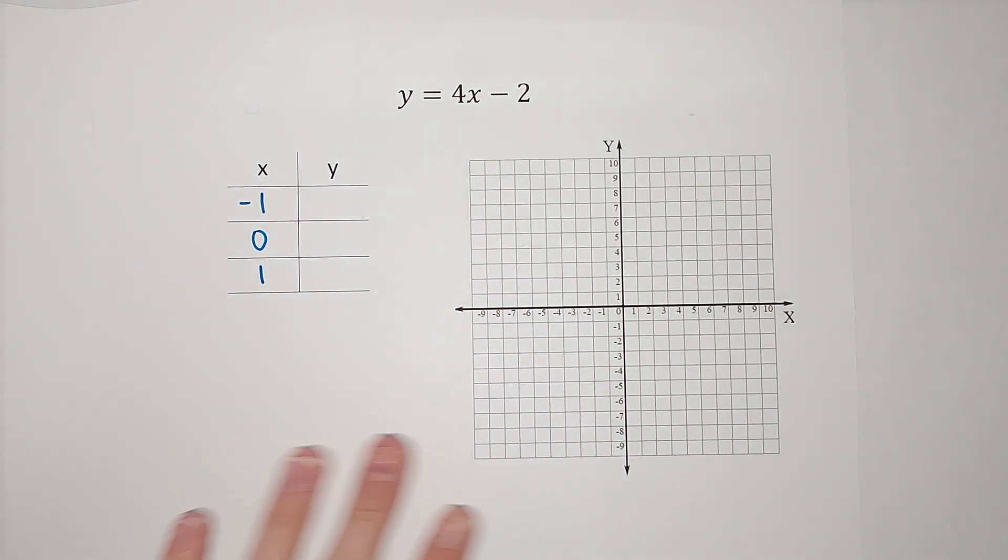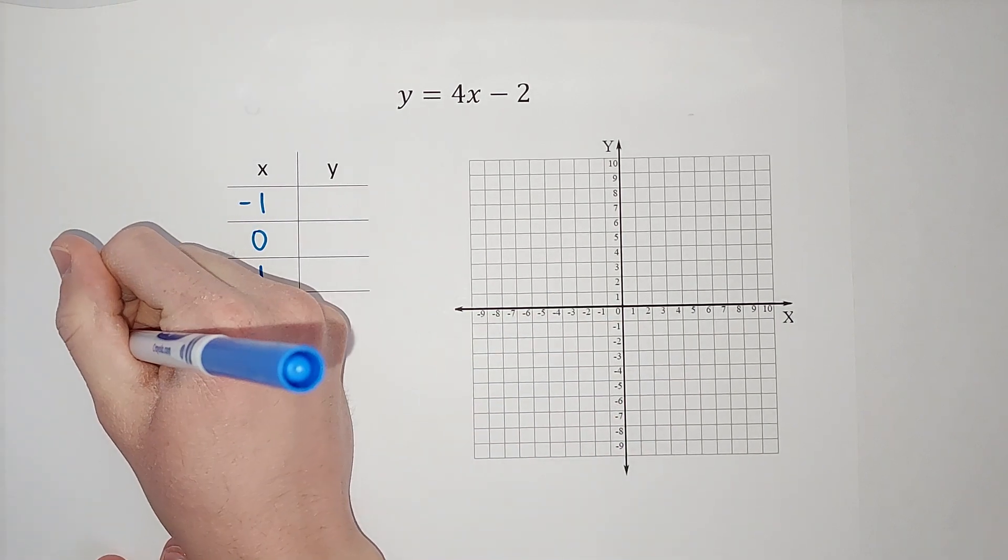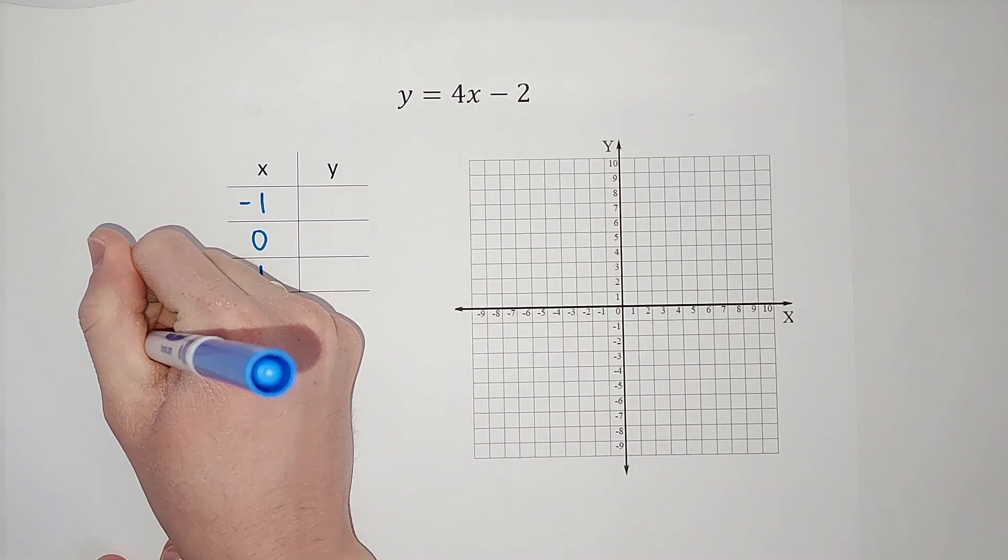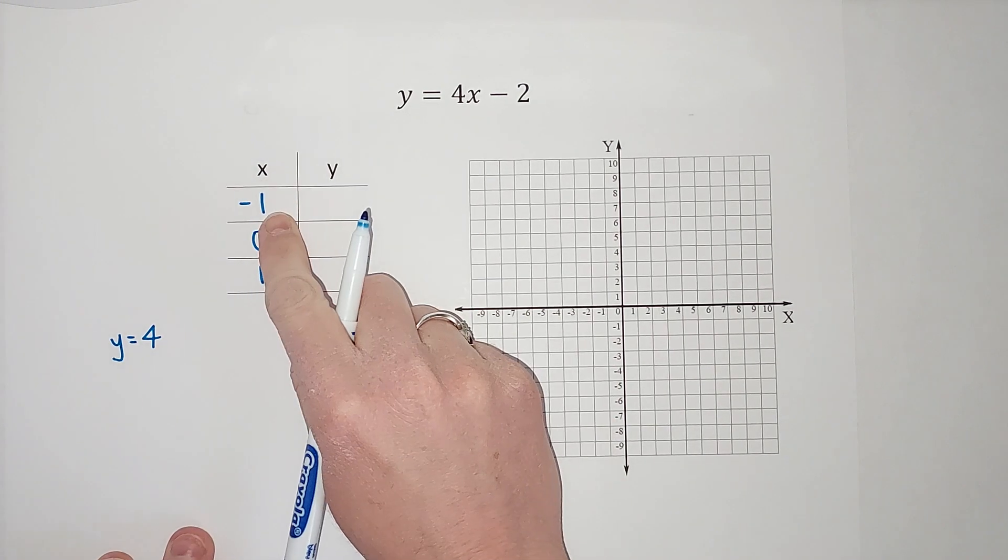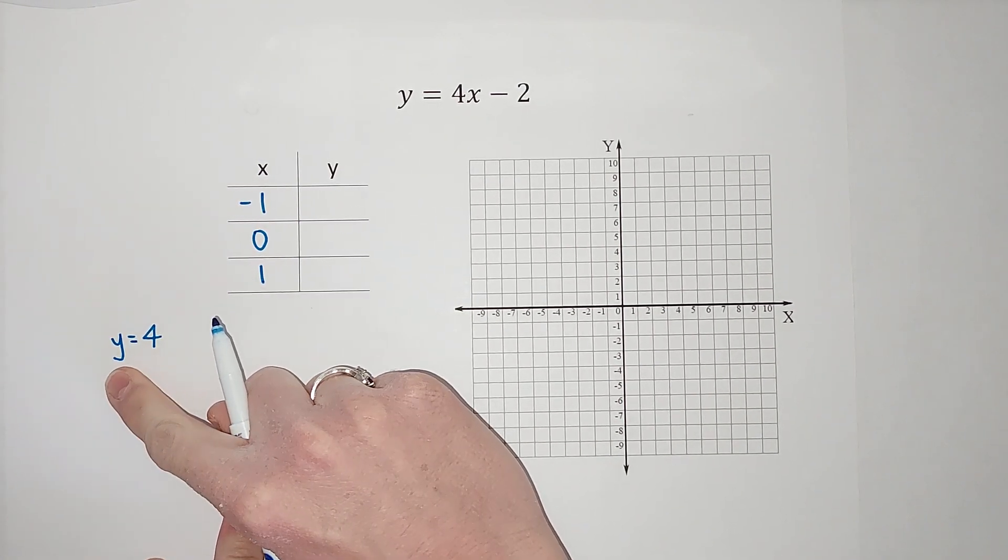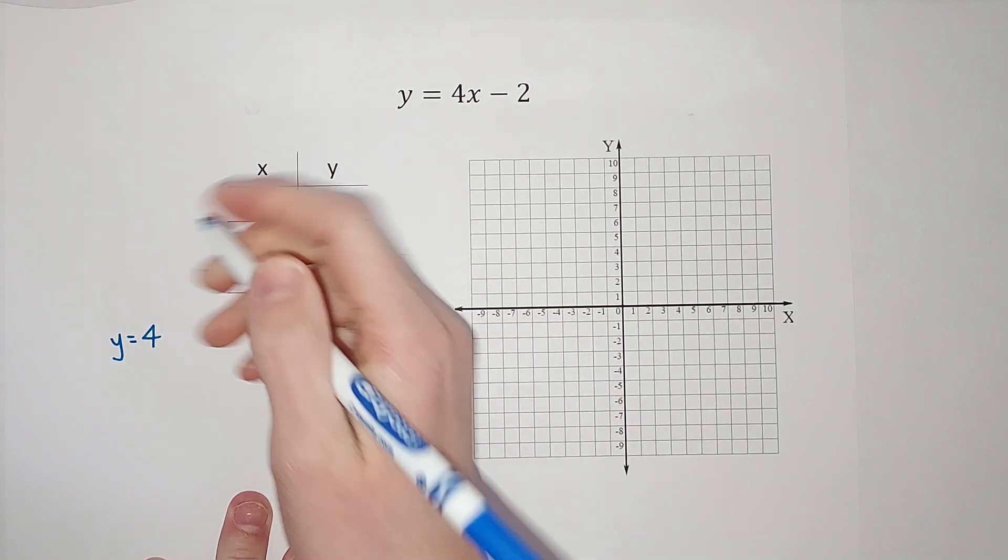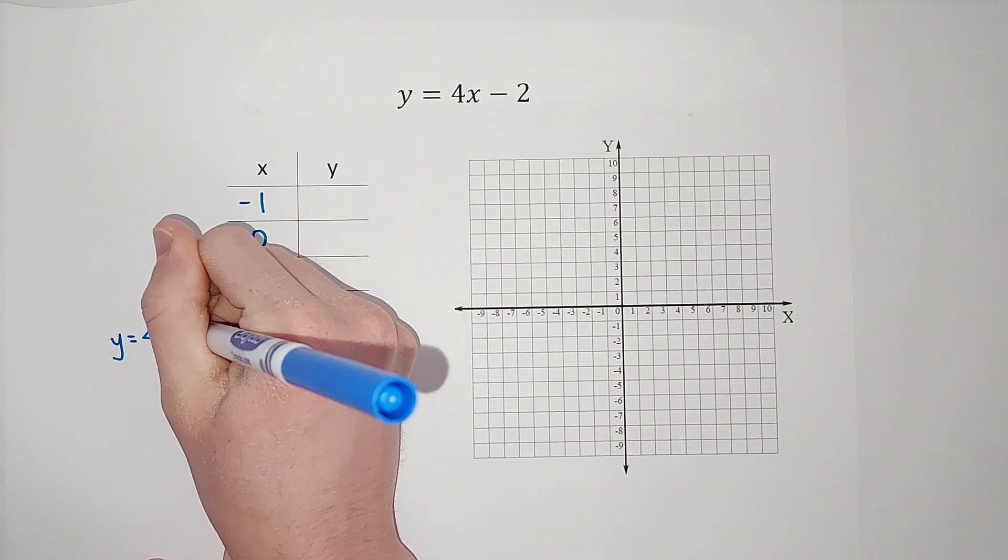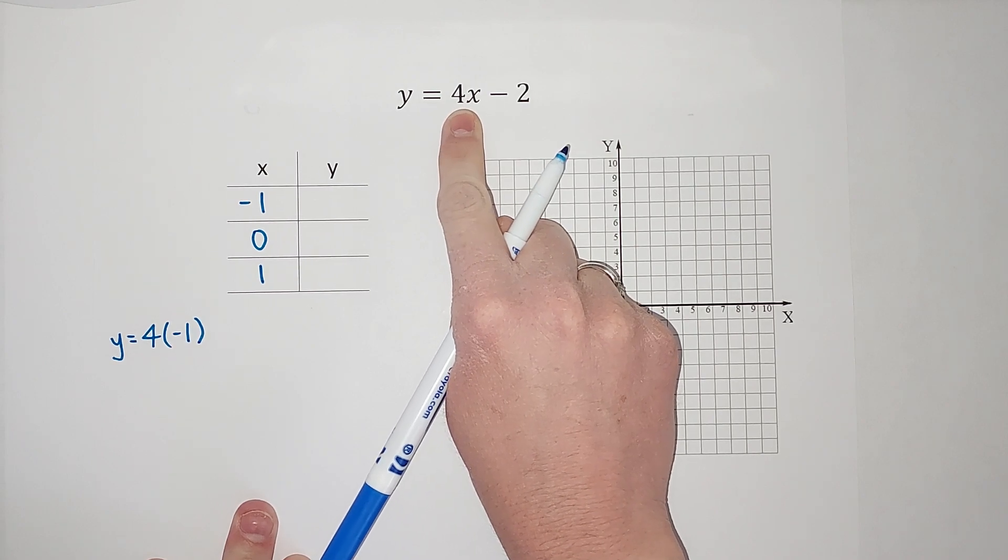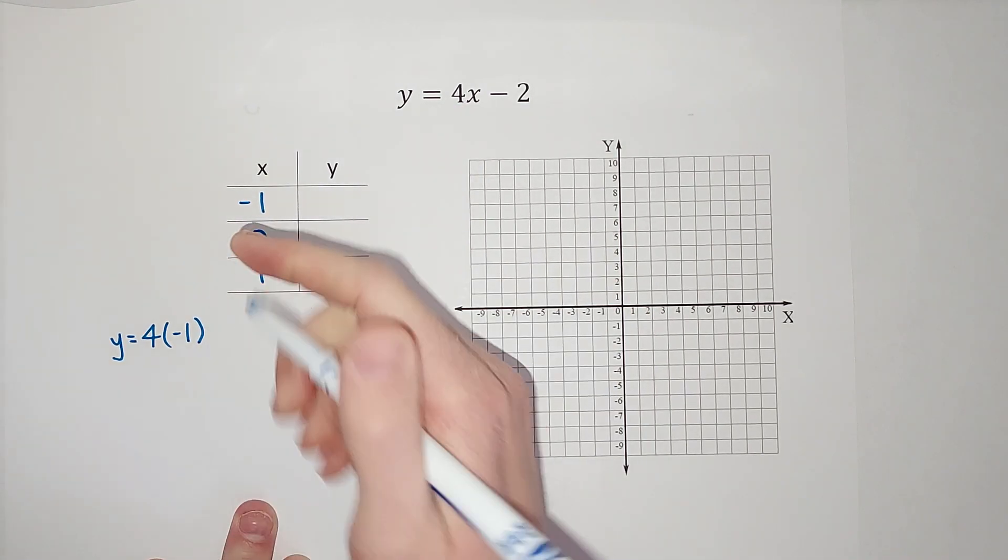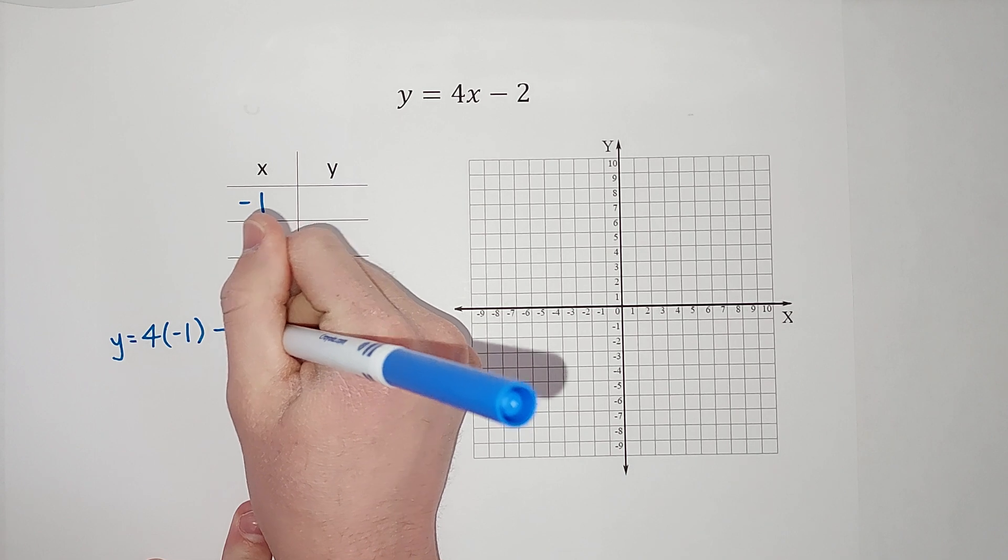So first one, we're going to start with negative 1. So y equals 4 times x. We want to know what y is when x is negative 1. So we're plugging in negative 1 for x. When those are written next to each other, they're being multiplied.